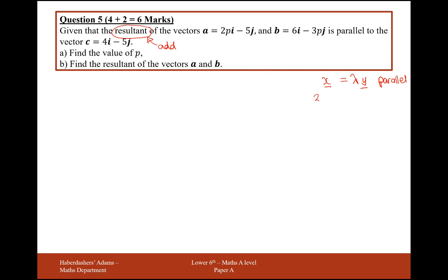So for example, 2i plus 3j is parallel to 6i plus 9j, with lambda being the value of a third here. So that's what we're going to look for. We're going to look to set one vector equal to another vector, but we've got to include a scalar multiple in there as well.